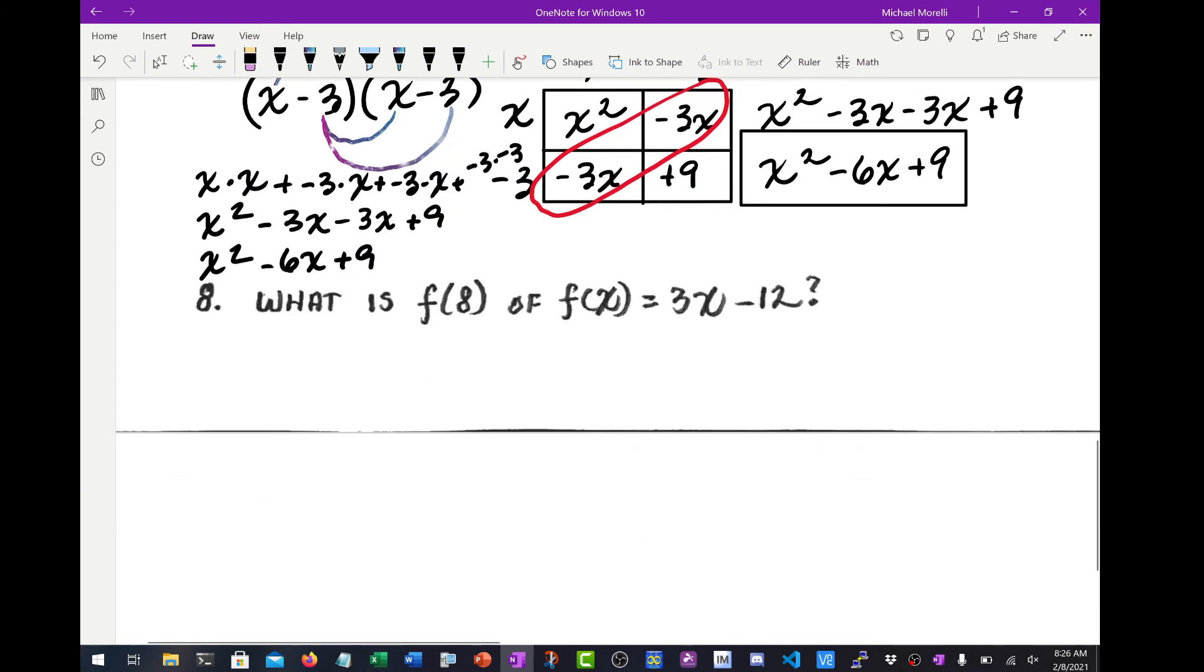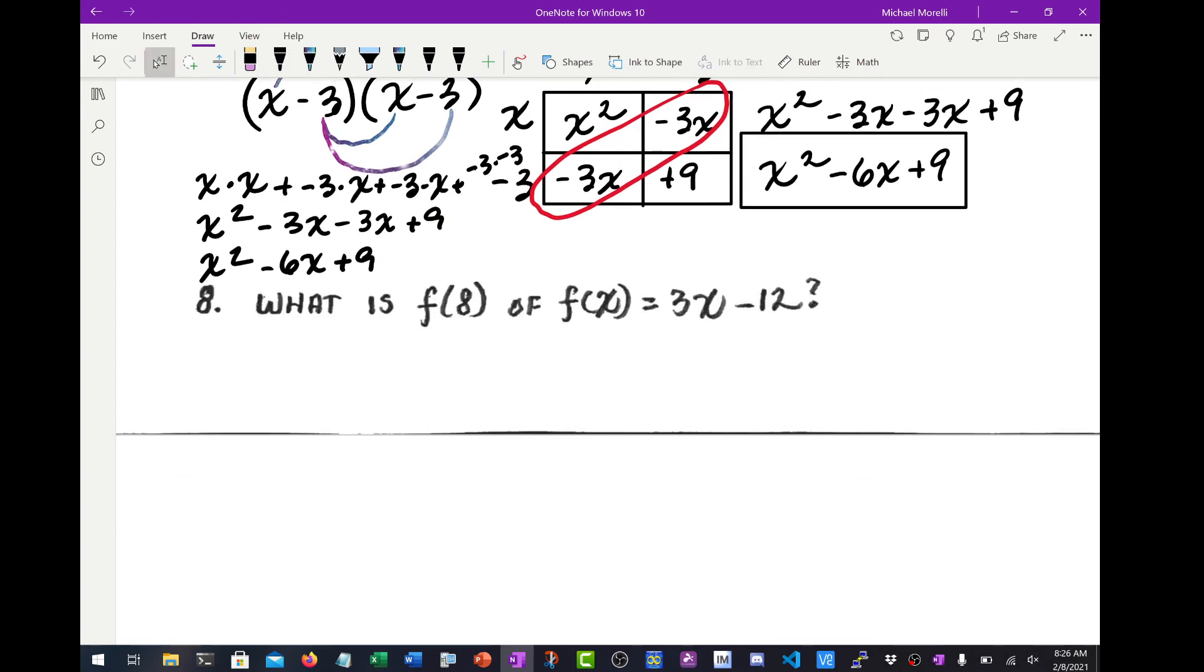Okay, moving on to number 8. And final question, what is F of 8? And that should say if F of X is 3X minus 12. So all you're doing is plugging in 8 for X. So you write F of 8 equals 3 times 8 minus 12. Well, 3 times 8 is 24, so it's 24 minus 12. 24 minus 12 is 12, so the answer is 12. And that concludes this assignment.